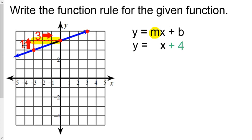And remember, your rise number, your up or down number, goes on top, and the left right number goes on bottom. So it's going to be 1 over 3, and it should be a positive 1 over positive 3. So y equals 1 third x plus 4.